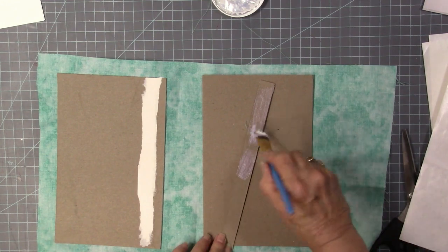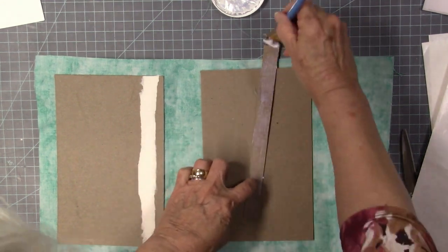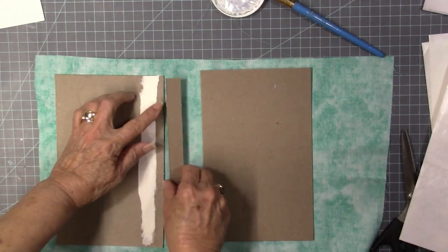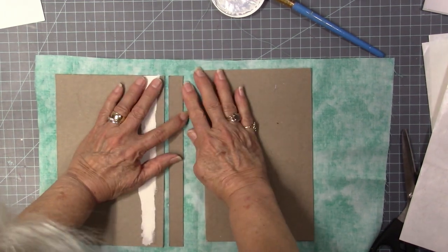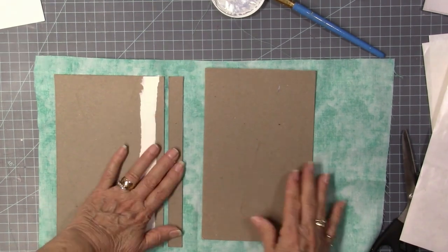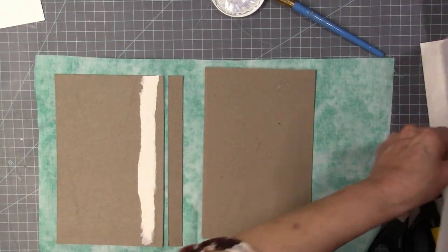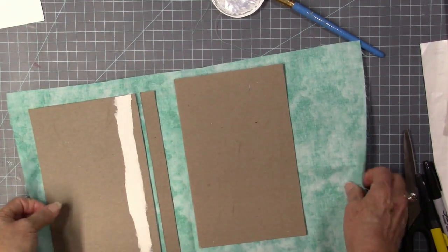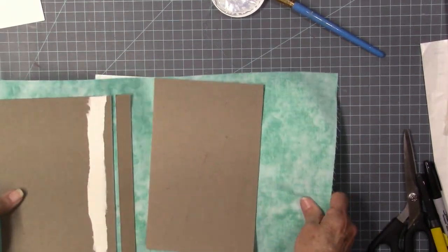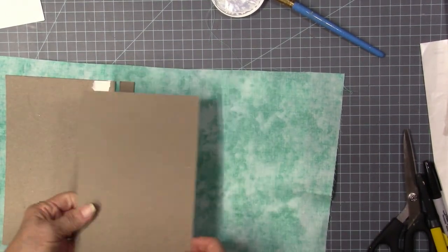So then there I'm gluing the spine in. I'm going to leave just a little bit, maybe not quite a quarter of an inch gap between the front cover, the spine, and the back cover. Push that down, and then I'm going to repeat that process on the back with the back cover.